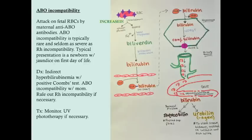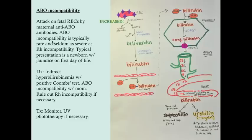ABO incompatibility is pretty similar, but it's not as severe. It's more common than RH incompatibility, but it's less commonly a problem. Mom has a different blood type than baby and has antibodies that attack the baby's blood cells. For example, if mom has type O blood and baby has type A blood, mom has anti-A antibodies which will cross the placenta and attack baby's red blood cells. It's very rare for this to be severe, so usually when you see severe immune-mediated hemolysis, it's going to be the RH isoimmunization.